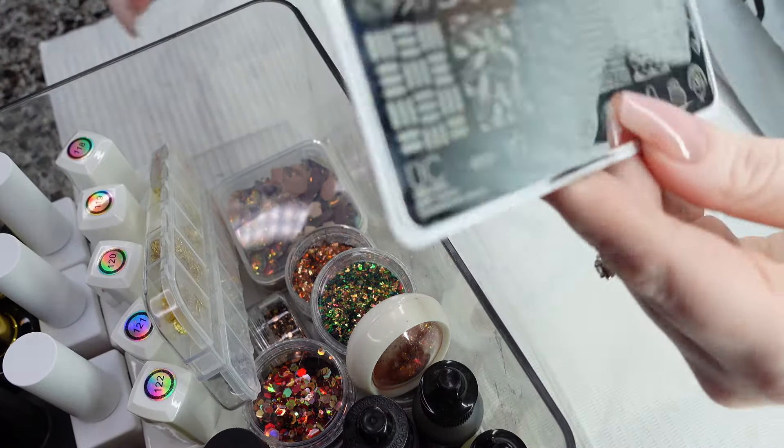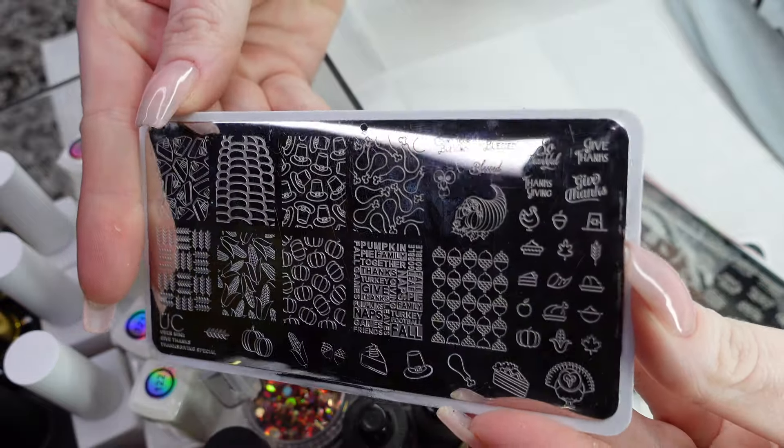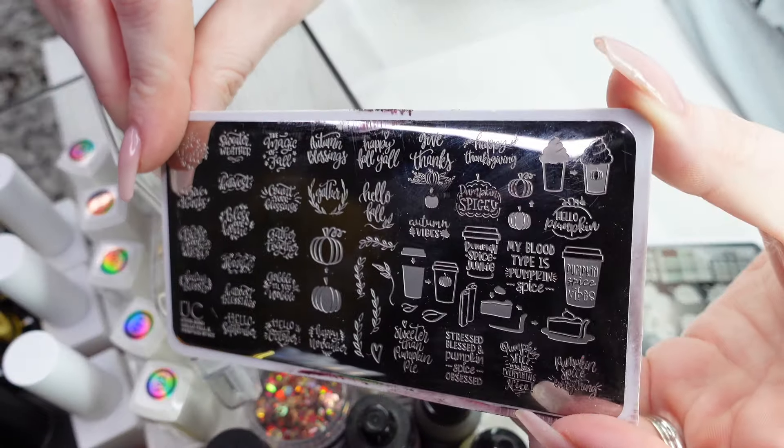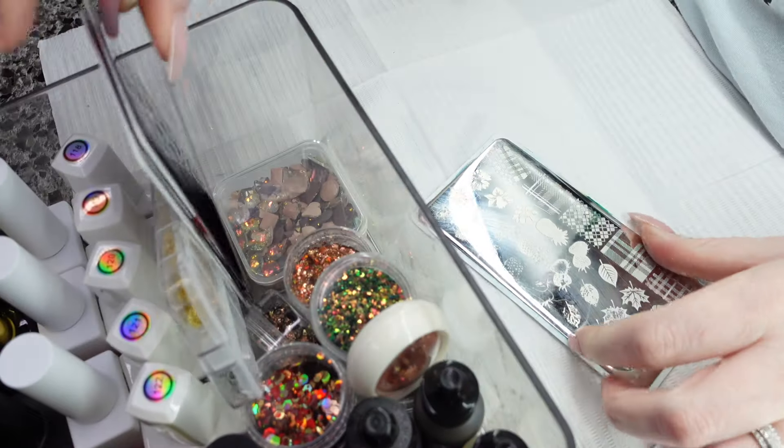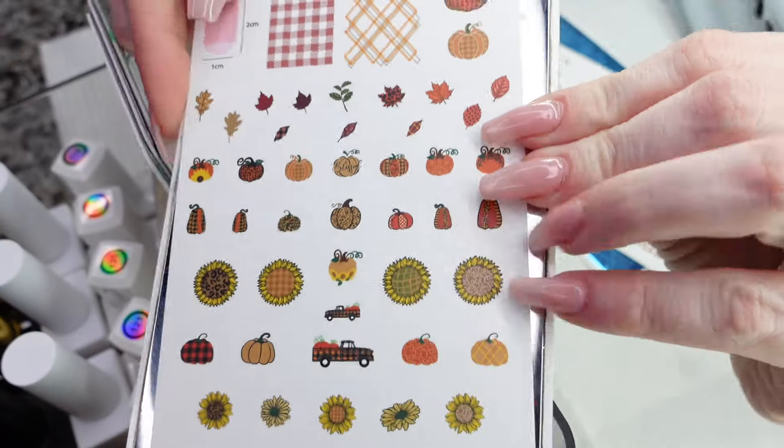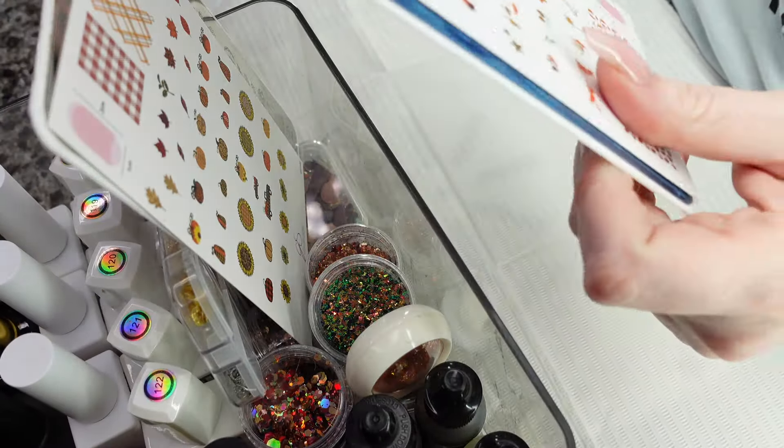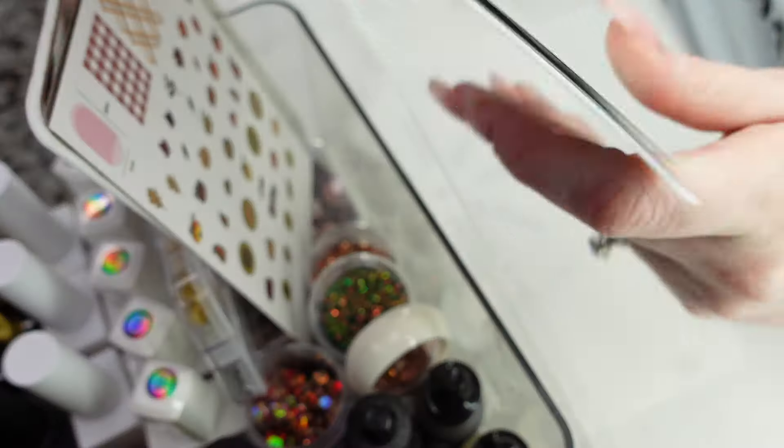And for stamping plates, two of these are from Uber Chic. This one, if you can see it. This one. This one I just grabbed because it had leaves on it. This one, I only want to use this image here. And then I have this one from Clear Jelly Stamper. This, I think I bought this one last year. I can't remember, but I've never used it. So this year, I'm going to make a point to use it. My bin is so full.